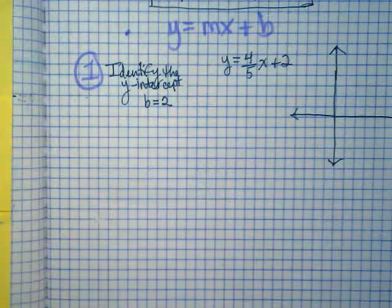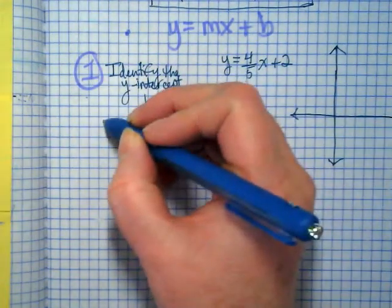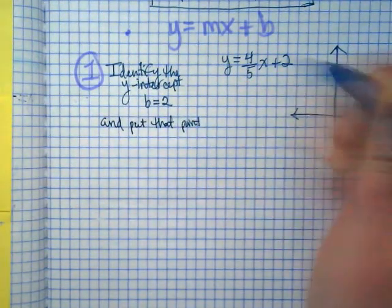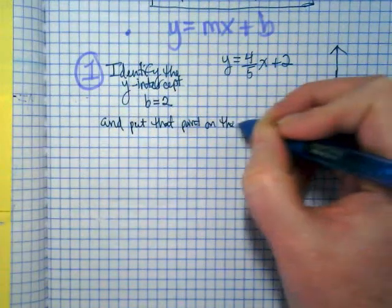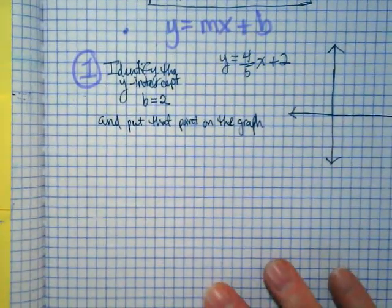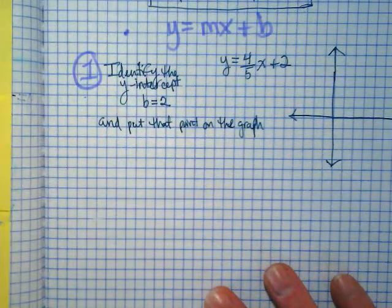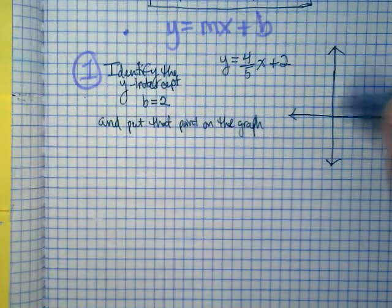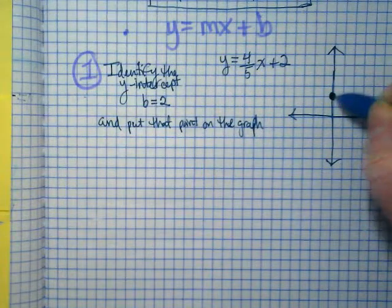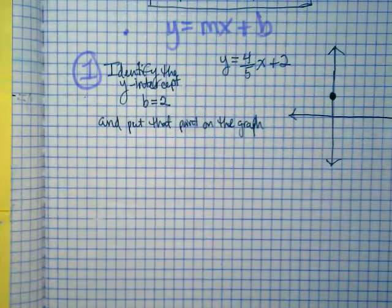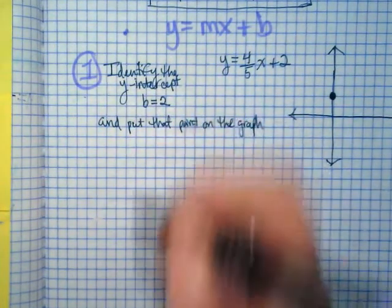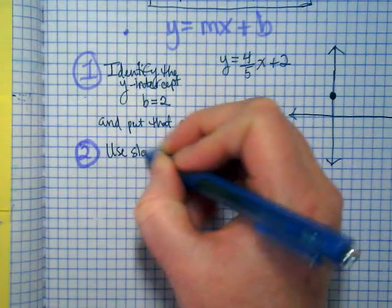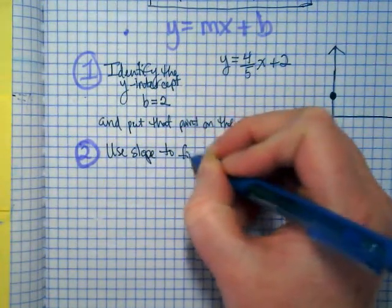Over here I want you to make a graph. Now our step 1 in the book does not say to then plot it, it says identify it, but we're going to put an and: put that point on the graph. We will talk about repeatedly in algebra 1 this year, in order to graph an equation you need two points. You can connect two points on a graph and make the graph of that line. So here's our first one. And then our step 2 from our book says use the slope to plot a second point.